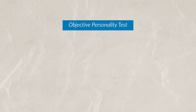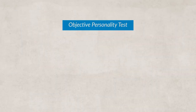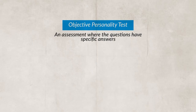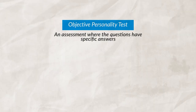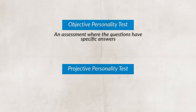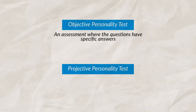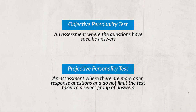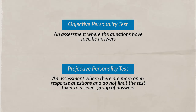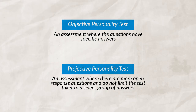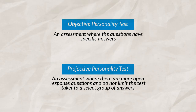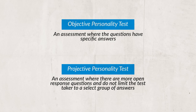When an individual takes a personality test, they may take an objective personality test — these have limited answers and seek certain responses. Or an individual may take a projective personality test, which is more open-response and does not limit the test taker to a select group of answers. These tests give ambiguous stimuli to an individual in hopes of revealing their unconscious thoughts.